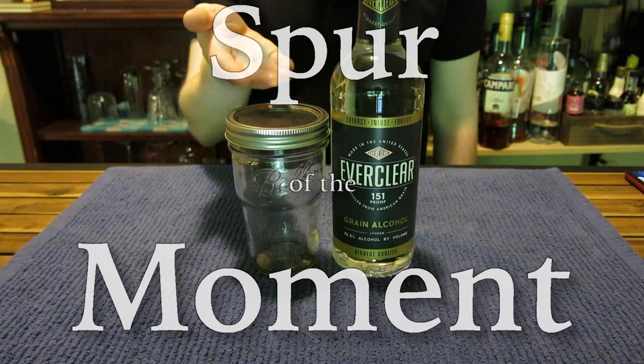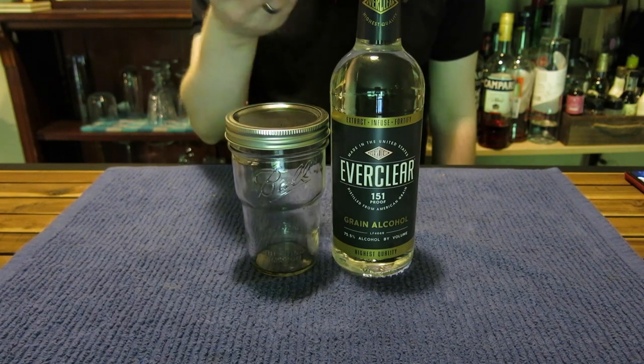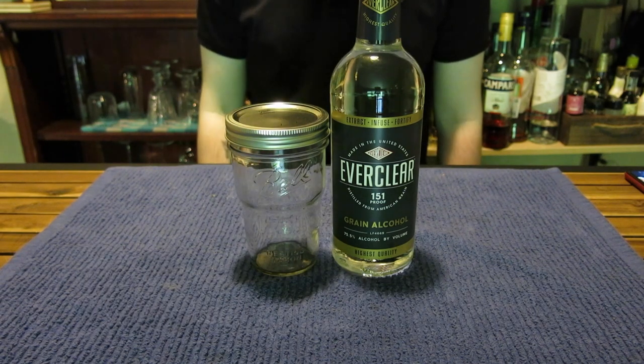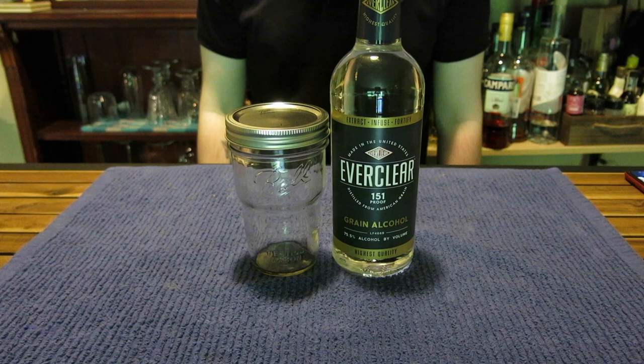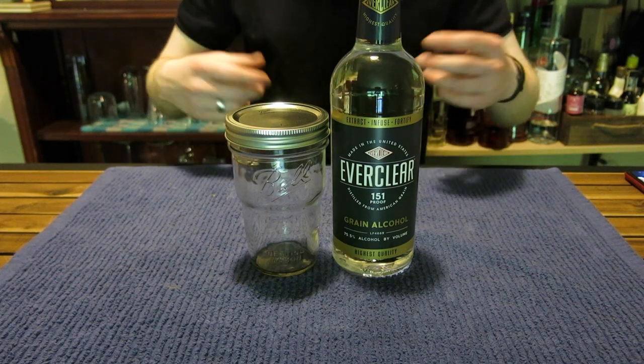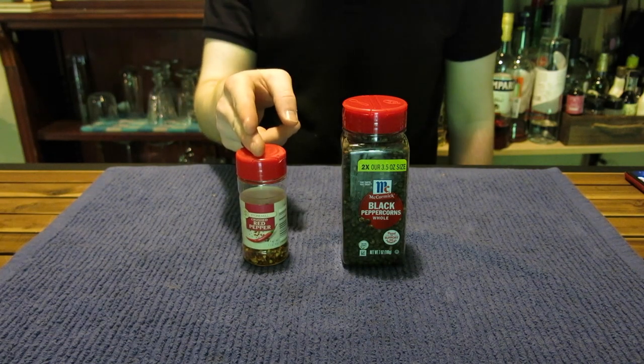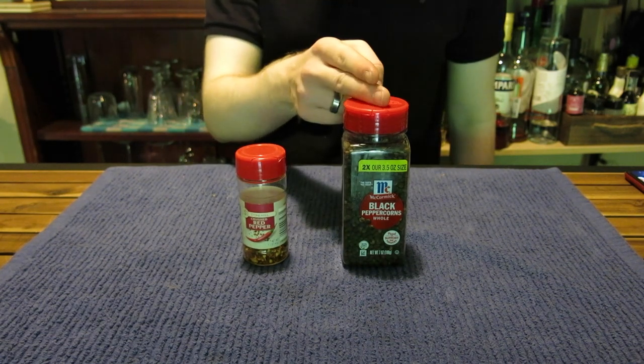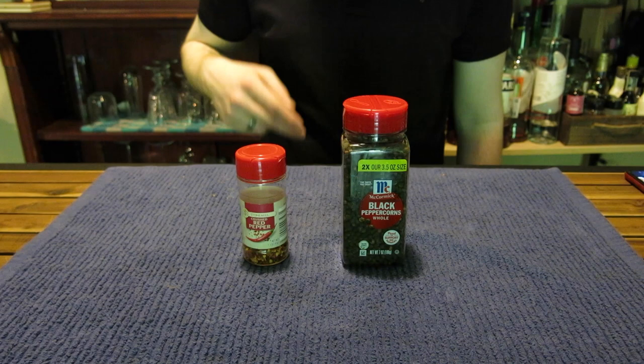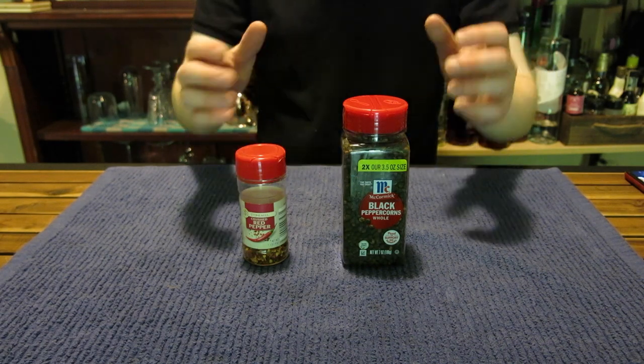You're currently looking at a mason jar and a bottle of Everclear, something that for many of you probably doesn't bring up fond memories. No worries, because we'll be using them for making our own double pepper extract today using crushed red pepper and black peppercorns. Now while I take these away and get the rest of our supplies ready, allow me to explain why we're doing this and how we'll do it.